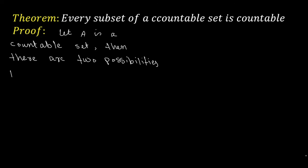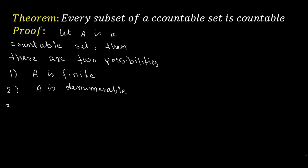The first possibility is A is finite. The second possibility is A is denumerable. These are the two possibilities: A is finite and A is denumerable.